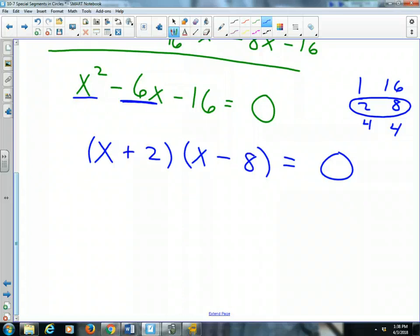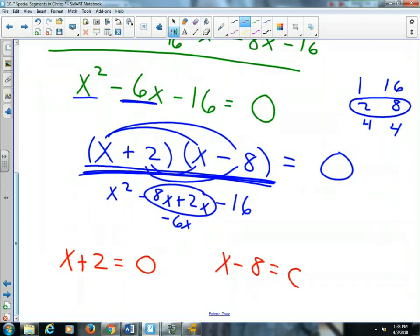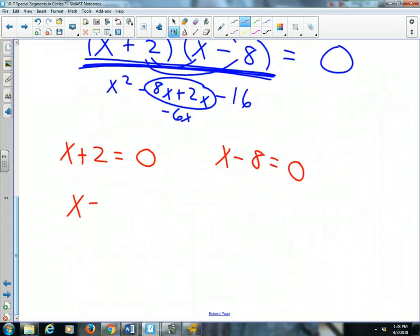Now, if I were to FOIL this, x times x is x squared. Outside, minus 8x. Inside, plus 2x. Outside, 2 times negative 8 is negative 16. And here, I get my negative 6x. So, bangerang, I factored it correctly. This is the correct factors. So, if those are the factors, now let's find our solutions. x plus 2 equals a 0 and x minus 8 equals a 0. So, to solve, x equals a negative 2 and x equals a positive 8. I have two answers.